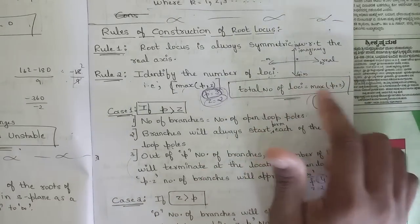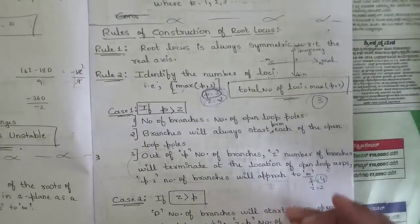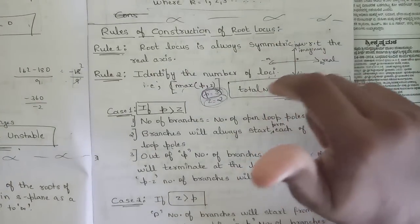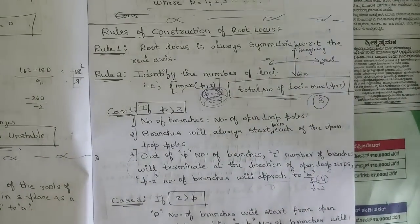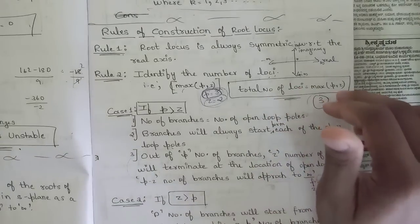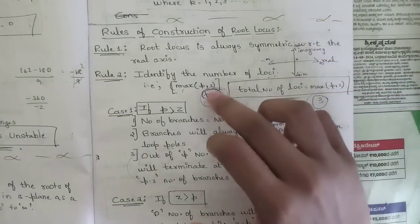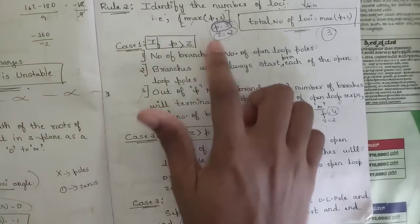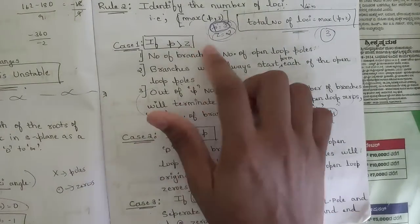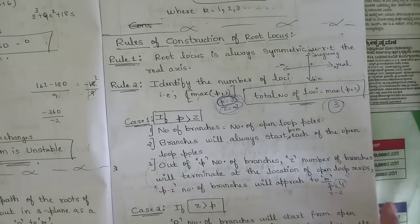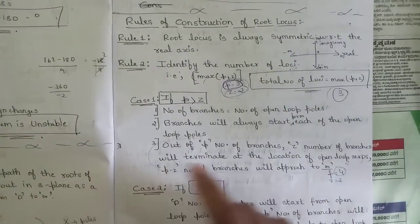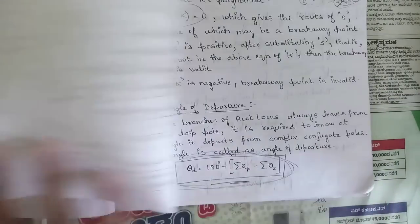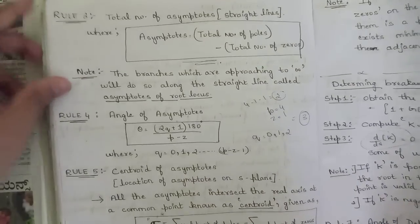The second rule is to identify the number of loci — the total number of loci is the maximum of poles and zeros. From the transfer function, setting the numerator to zero gives the zeros and setting the denominator to zero gives the poles. Whenever the number of poles is greater than the number of zeros, that is the total number of loci. When poles are greater than zeros, branches terminate towards infinity; when zeros exist, one pole terminates towards each zero and the rest go to infinity.